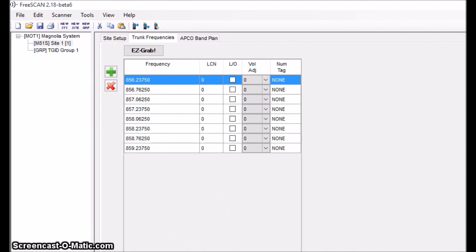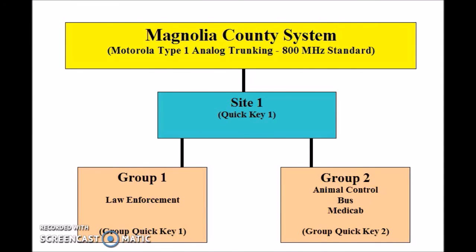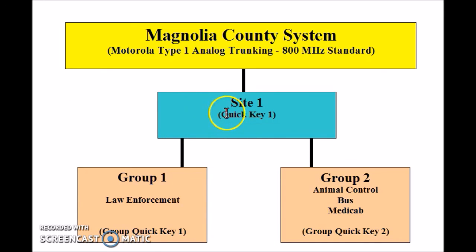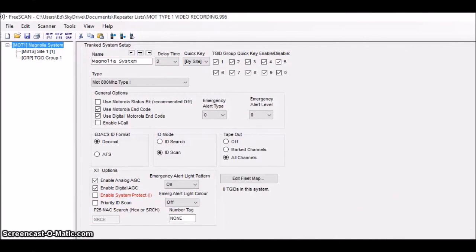Here's a quick refresher on how far I've gotten. The system portion is complete — I've defined the name, the type of system, and the fleet map. Site one is complete — I've input all the trunking frequencies and assigned quick key number one. Now I'm moving down to group one, the law enforcement group, where I'll assign sub-fleet identifications and alpha tag information, and assign group quick key number one.